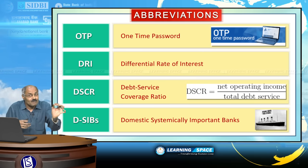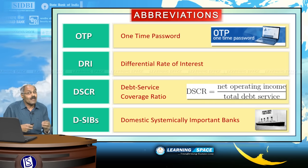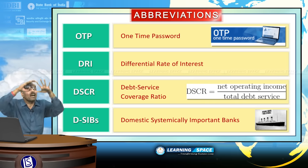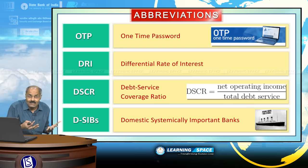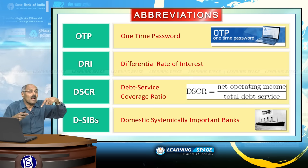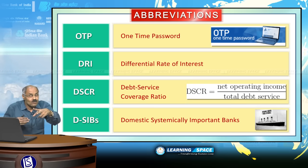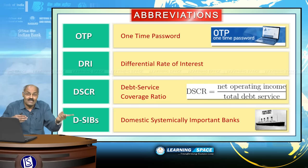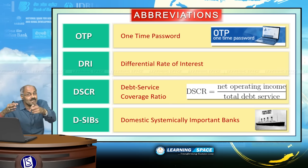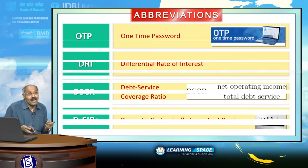D-SIBs means Domestic Systemically Important Banks. The main purpose of systemically important banks is that they are very important in the financial system — they are too big to fail. If they fail, it will have an adverse impact on the economy as a whole. Reserve Bank of India recently nominated two banks — State Bank of India and ICICI Bank — as Domestic Systemically Important Banks.